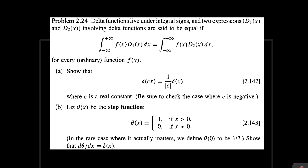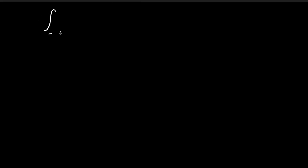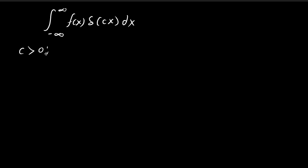Now let's try to solve part a. In order to solve part a, we're going to first consider this expression over here: the integral of f of x times the Dirac delta function of cx dx. We're going to split this up into two cases. The first case is when c is larger than zero, so let's deal with this case first.